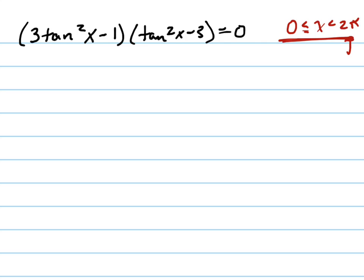So let's find that. So this times this equals 0, which means 3tan²x - 1 = 0, or tan²x - 3 = 0.